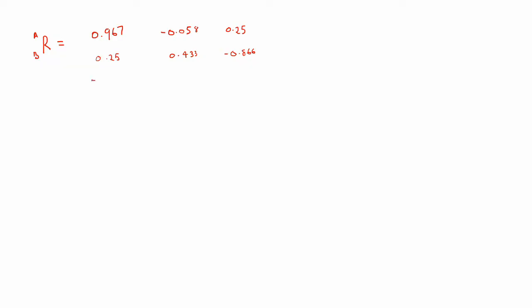Using this we can now find our transformation matrix TAB. A quick recap: this would be equal to RAB, the position vector of the origin of B relative to A, 0, 0, 0, 0, 1.